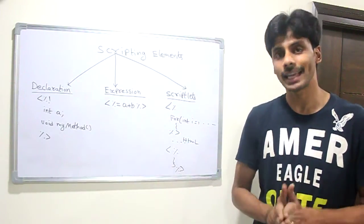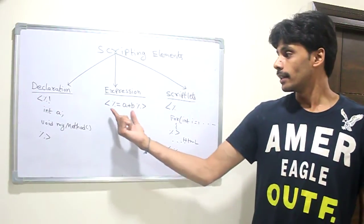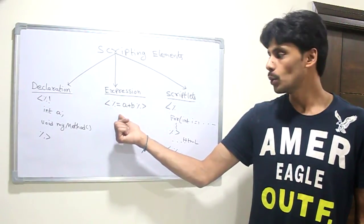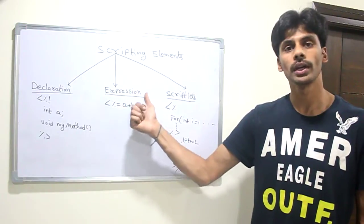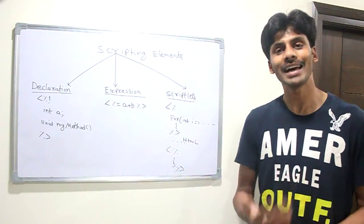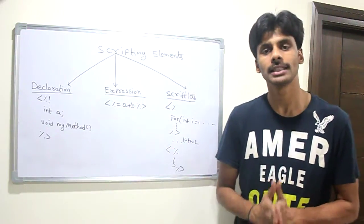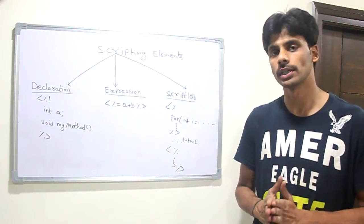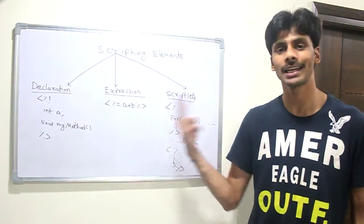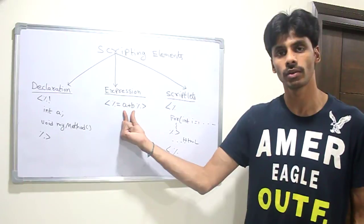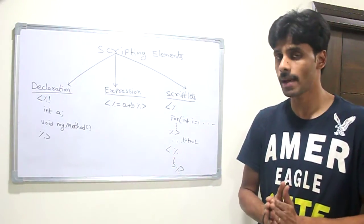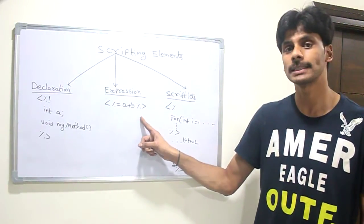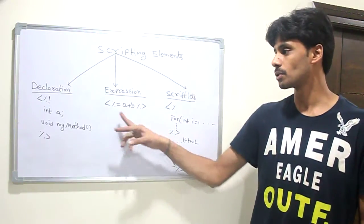The second one is expression. The syntax is the less-than symbol followed by percentage equals. Whatever code you put in here will be evaluated by the JSP container and the result is sent back to the browser. So the expression tag does two things: it evaluates the expression within and then sends the result back to the browser. It also ends with the percentage greater-than symbol.